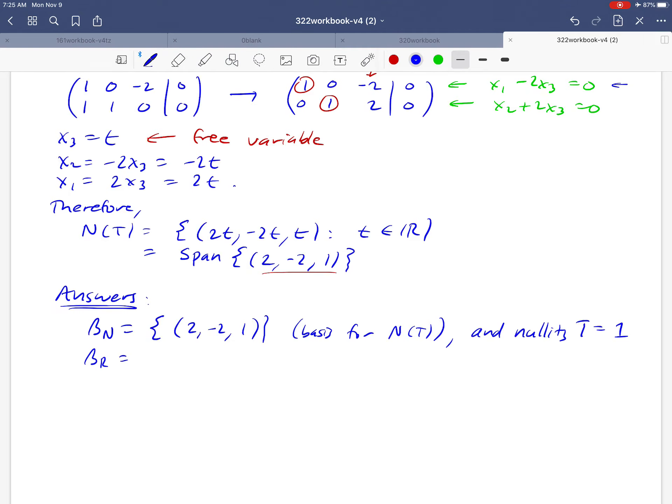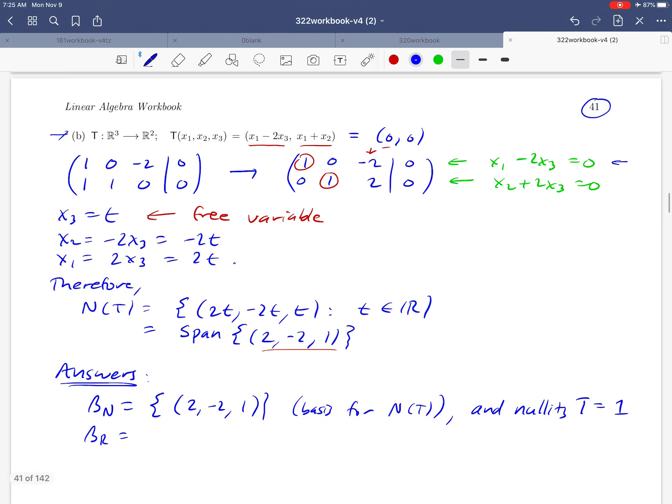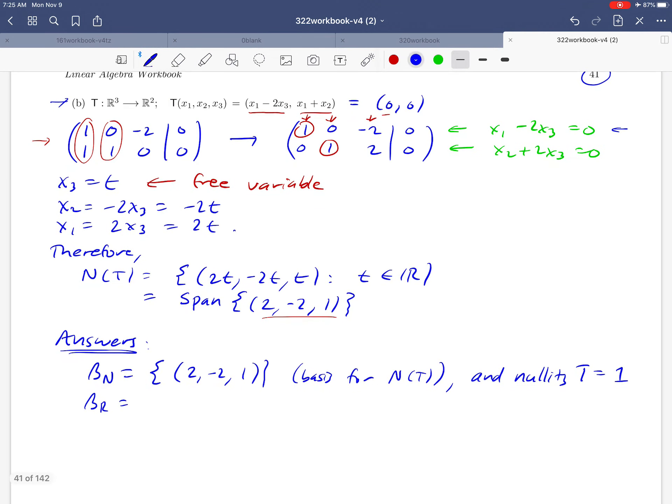What about a basis for the range? Well, in the last example, we discovered that we can find a basis for the range by just going back to our matrix and picking out the pivot columns. We've got pivots in the first and the second column. That means that these two vectors should be enough to give us a basis for the range. So we're going to get 1, 1 and 0, 1.